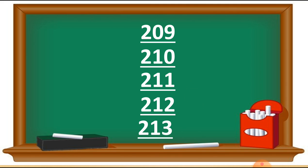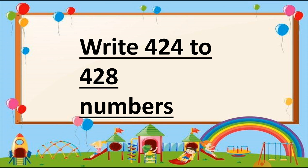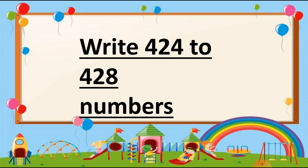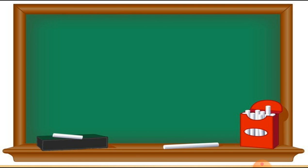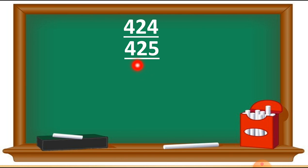Hope your doubt is clear. Here is one more example: write the numbers 424 to 428. We start with 424. The number 4 at the hundreds place will stay as it is, and we make changes in the last two digits, 24. After 24, the number 25 will come, so we write 425.